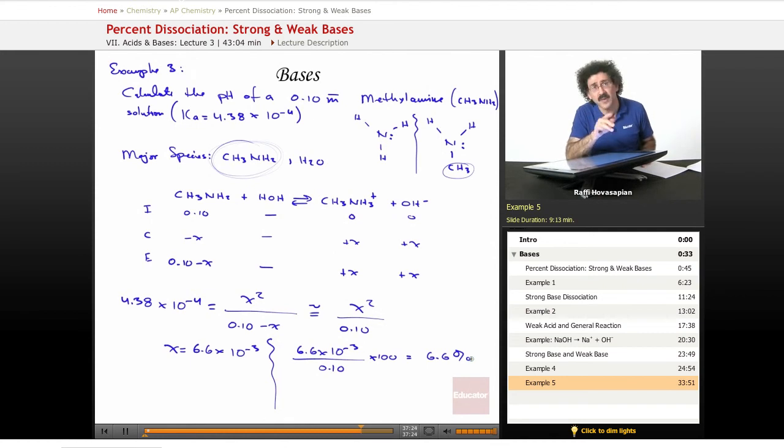That means you have a choice. You can't use this approximation in other words. You have to actually solve this whole equation as it is. You can't eliminate the X from here. You have to solve this equation, either solve it as a quadratic equation, which is not a problem. It's easy enough to do. It's just numbers. You have a calculator, you can do it.